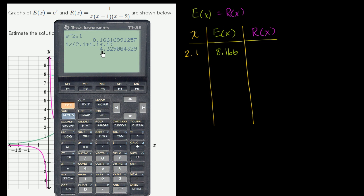It's 1 over 2.1 times 1.1 times 0.1. 1 over all of that. So that's 4.32.